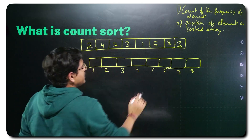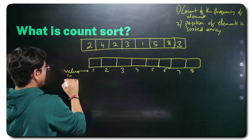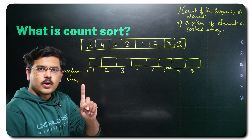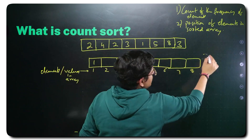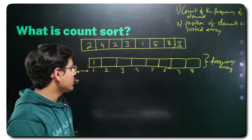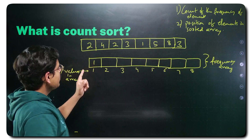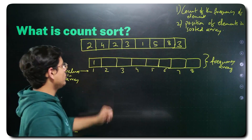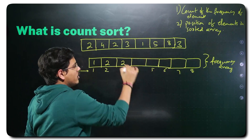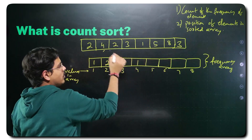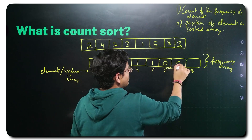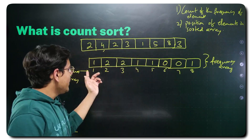These numbers are representing the values in the array — elements in array. For 1, the occurrence is 1, so frequency is 1. This array is the frequency array — you can also name it count array. 1 is occurring once so I wrote 1. When you come to 2, you find it is occurring twice, so you write 2. When you come to 3, it is again occurring twice so frequency is 2. When you come to 4, it is occurring once so I write 1. When you come to 5, again it is occurring once so 1 is the frequency. 6 is not occurring so 0, 7 is also not occurring so 0, 8 is occurring once so 1.